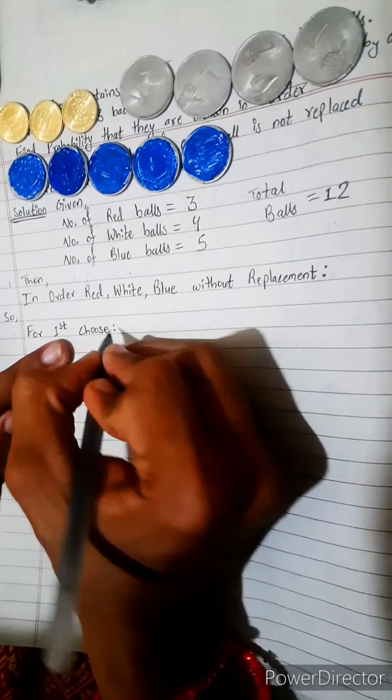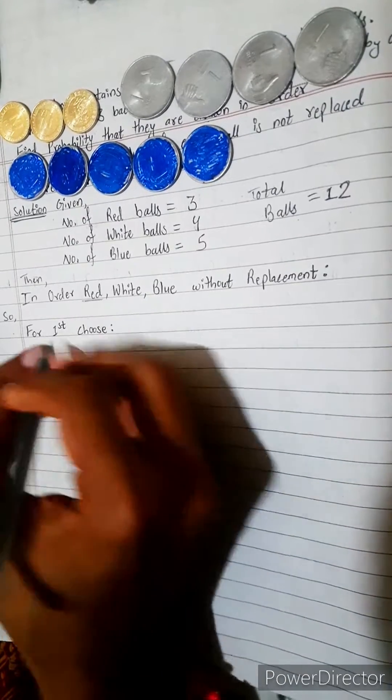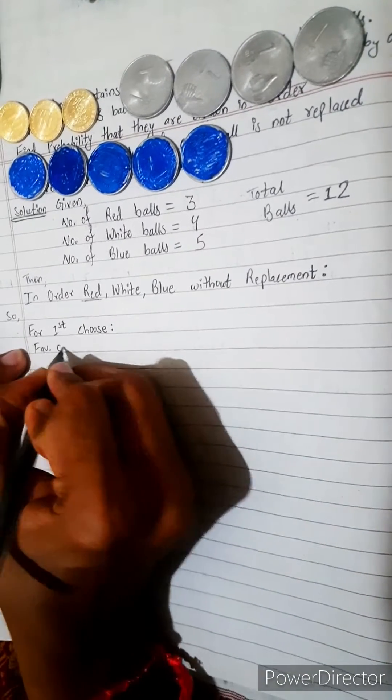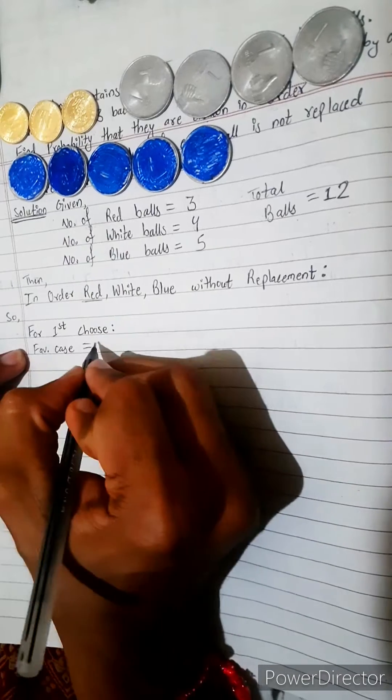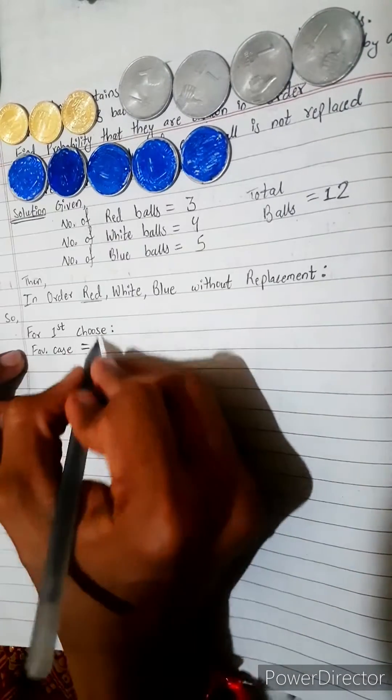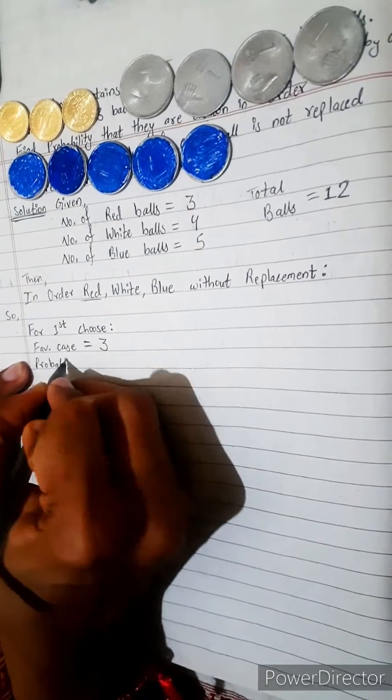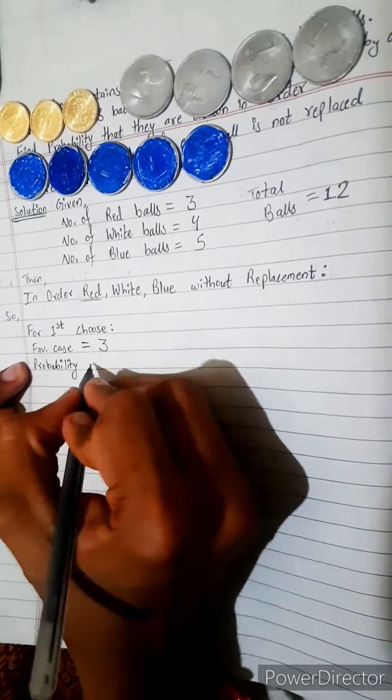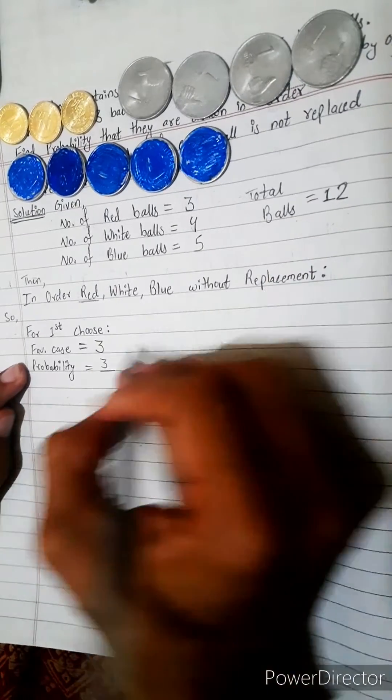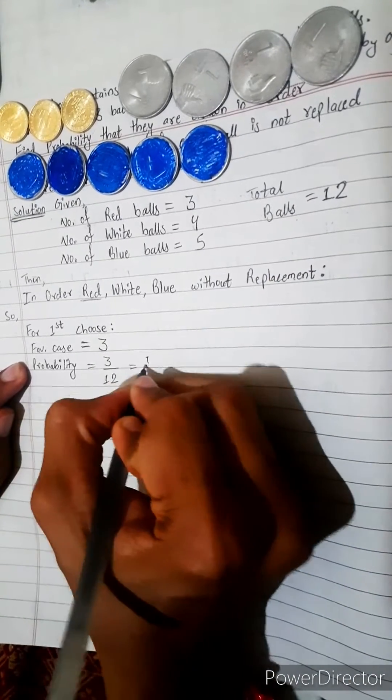For first choose what we need? Red. So favorable case equals how many are red? 3 are red. So favorable case equals 3. Probability equals favorable case divided by total. Total is 12. 3 by 12 equals 1 by 4.